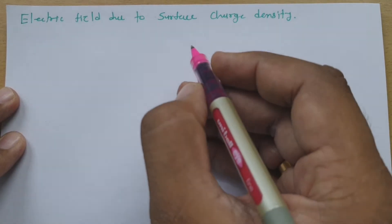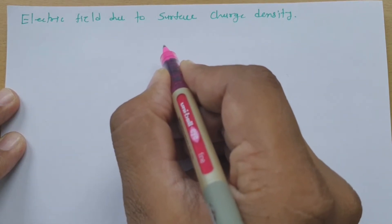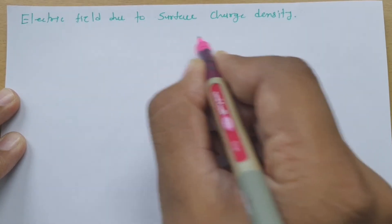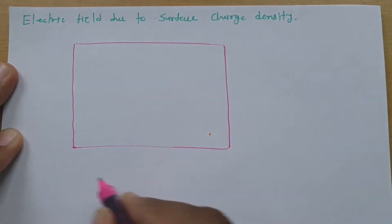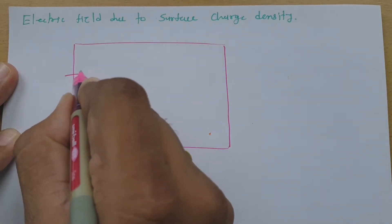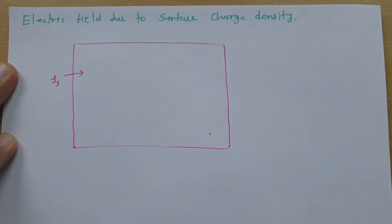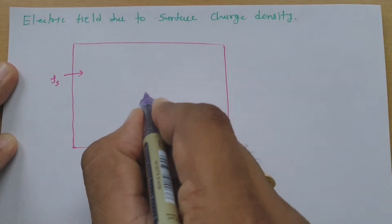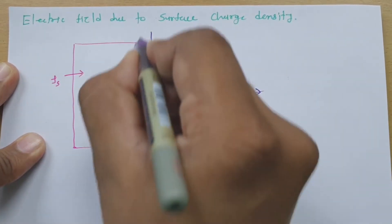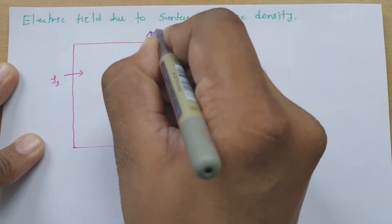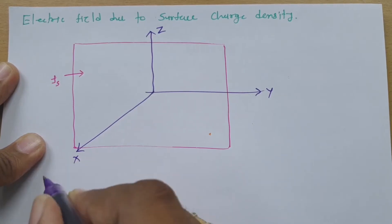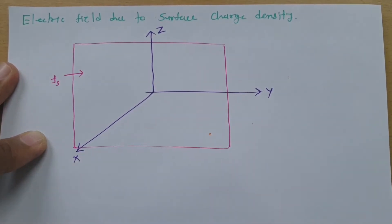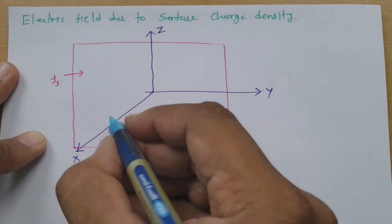Let us consider a surface charge placed on the YZ plane. This is the surface charge and its surface charge density is rho s, placed on the YZ plane. Here this is the Y axis, this is the Z axis, and this is the X axis. On the X axis, I am considering one point at which we need to measure the electric field.